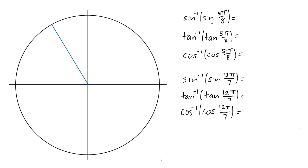We can't say that sine inverse of sine of 5π over 8 is just 5π over 8 because our answer to any sine inverse question needs to be in the fourth or first quadrant, specifically between negative π over 2 and positive π over 2.